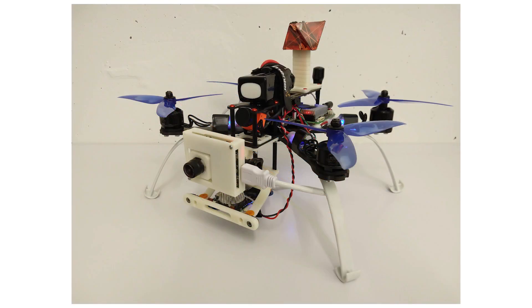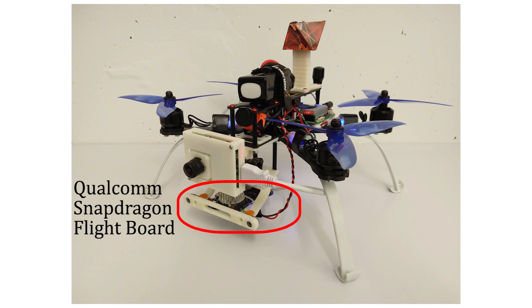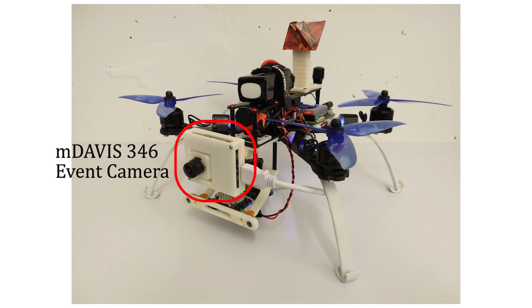The platform we use to collect the data is designed around a first-person view, or FPV, drone racing frame. On it, we mounted a Qualcomm Snapdragon flight board with a forward-looking wide-angle camera, an mDAVIS 346 event camera, and an UpBoard for recording its output.